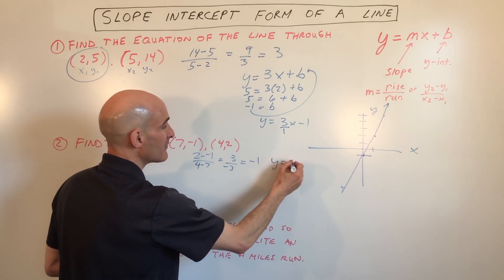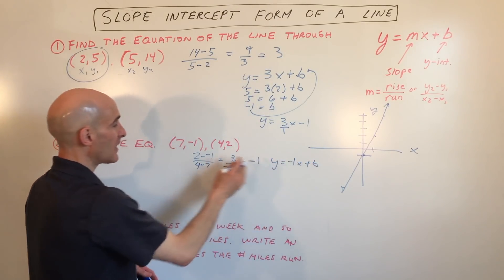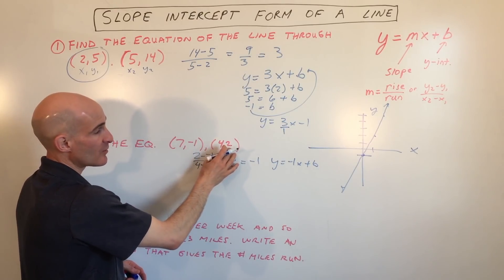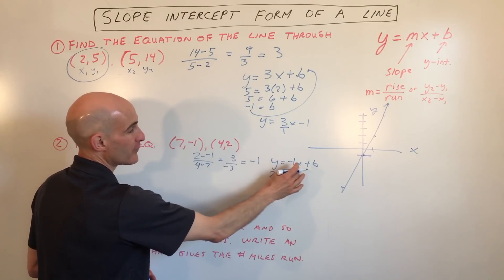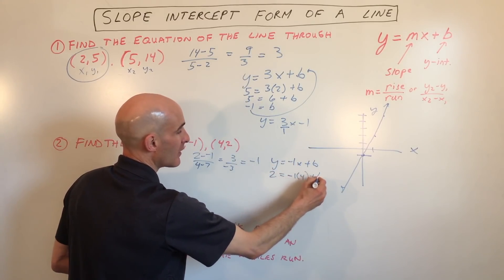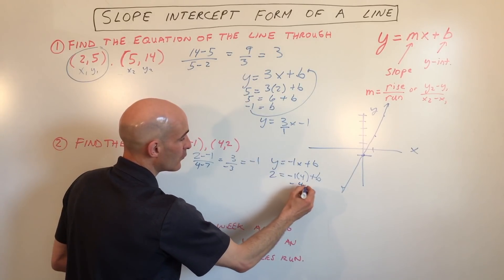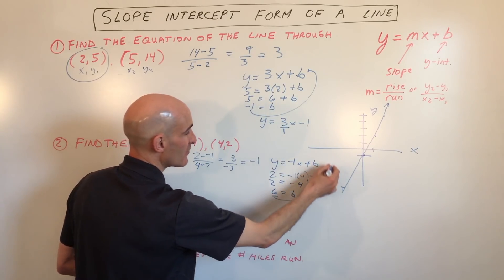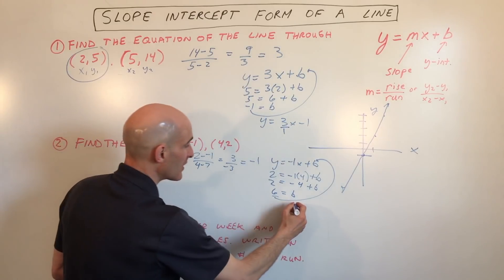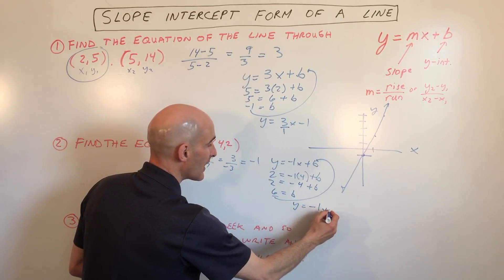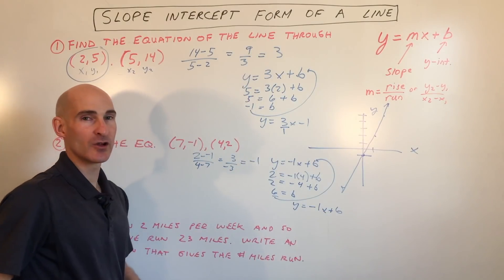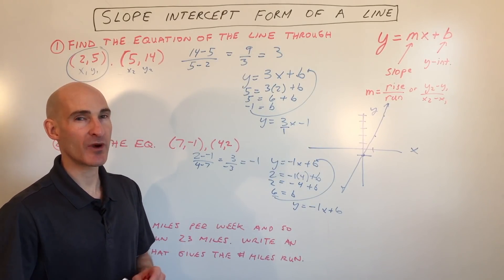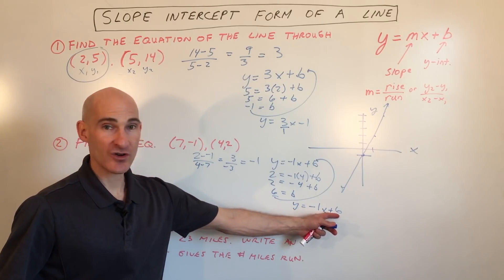Now we need to find out what our b value is. We're going to pick one of these coordinates, either this point or this point. I'm going to pick this one here, (4,2). So I'm going to put 2 in for y, I'm going to put 4 in for x, and we're going to solve for b. So this is negative 4 plus b equals 2. I'm going to add the 4 to the other side, so b equals 6. I'm going to put the 6 back in for b. And so we get y equals negative 1x plus 6. Now if I'm going a little bit too fast, you can go to the settings and slow this down to half speed, or you can back up and repeat a part of the video. We've got our equation here: negative 1x plus 6.